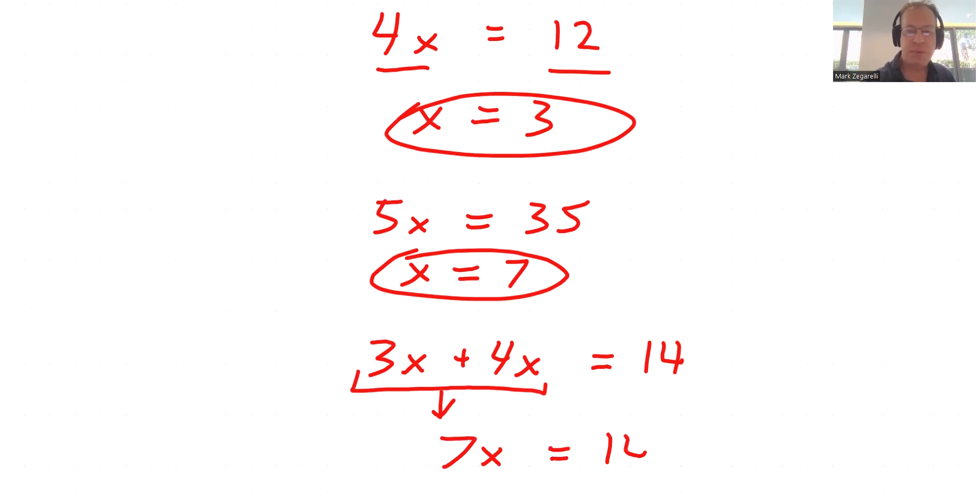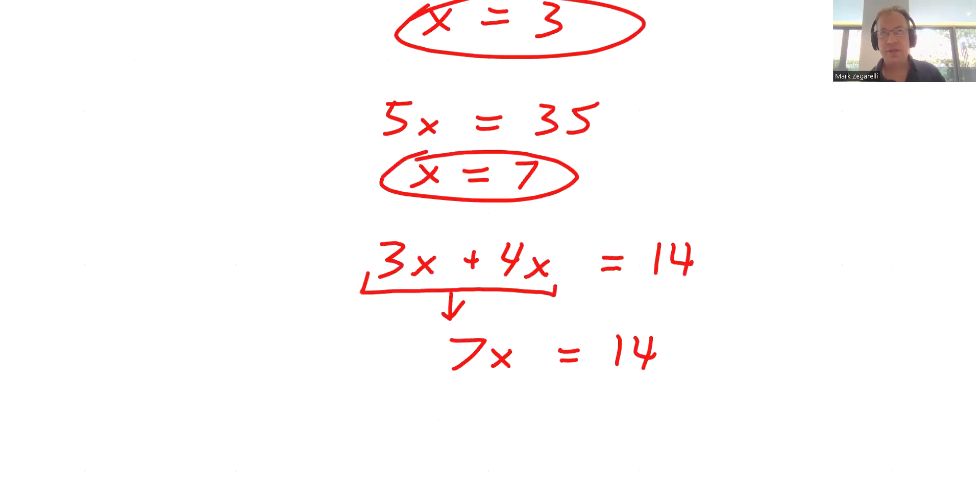And now you could probably look at this equation and say, I know what x is. x equals 2 because 7 times 2 equals 14.